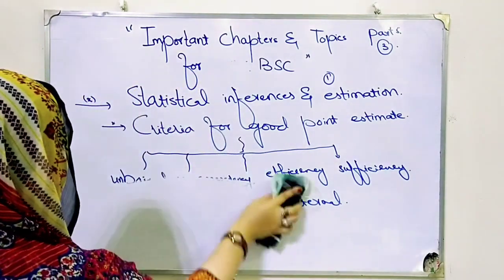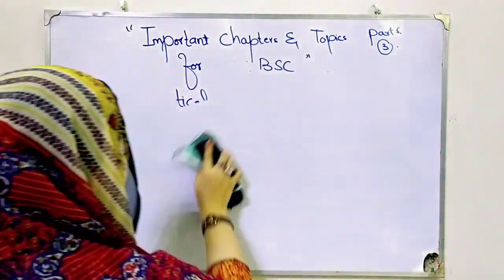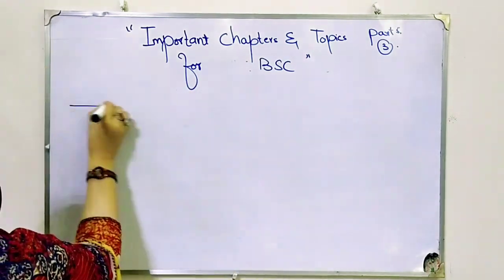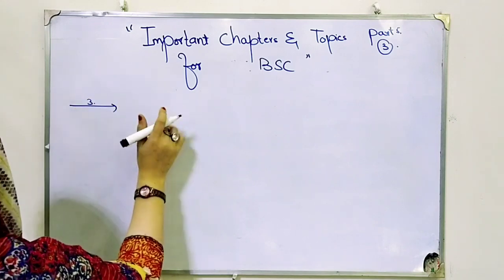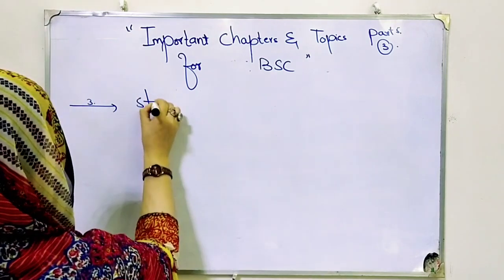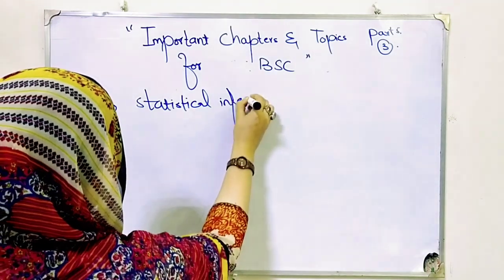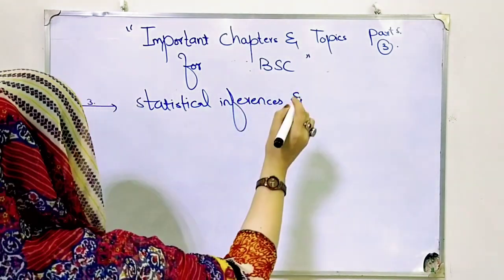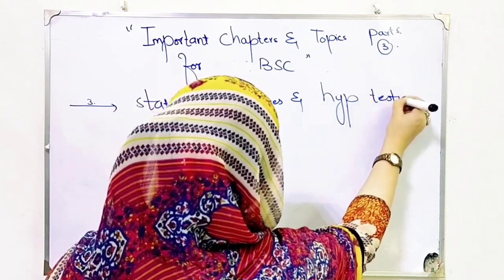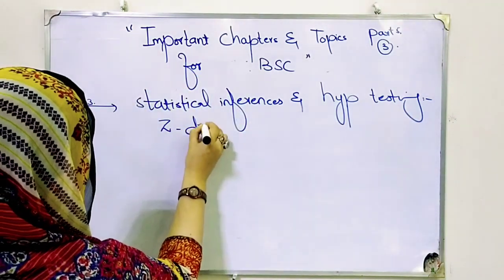Next, the third chapter — Statistical Inferences and Hypothesis Testing. You have to answer questions from the Z and T distribution. This is Part 1. If this chapter seems difficult, you can still prepare it — it is actually a very good and easy chapter. It is not difficult. This chapter uses Z distribution.